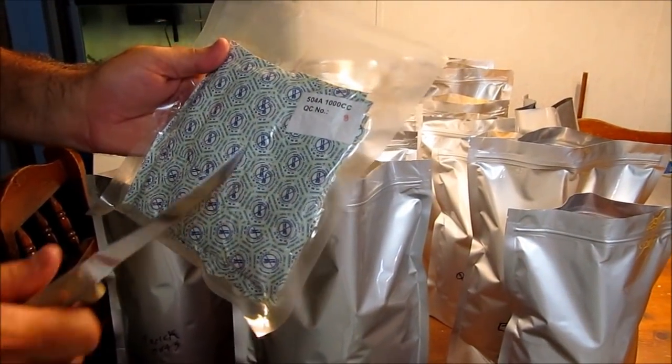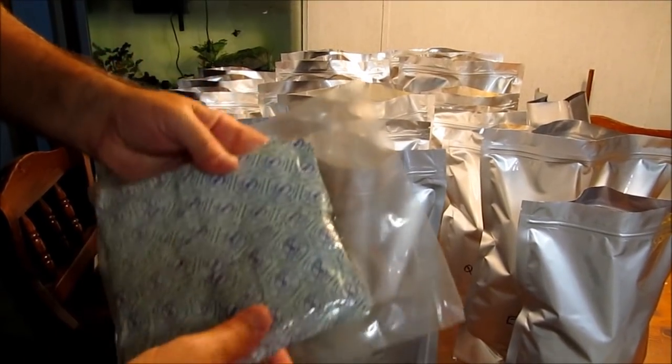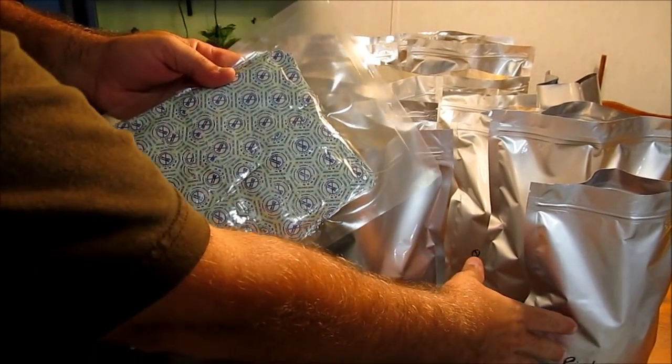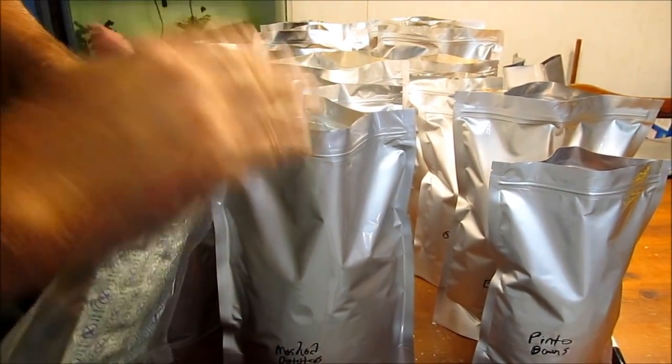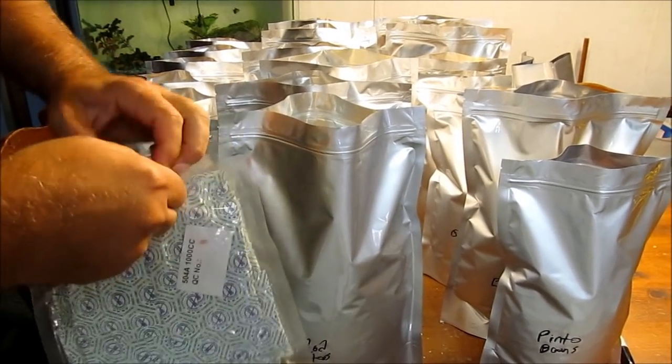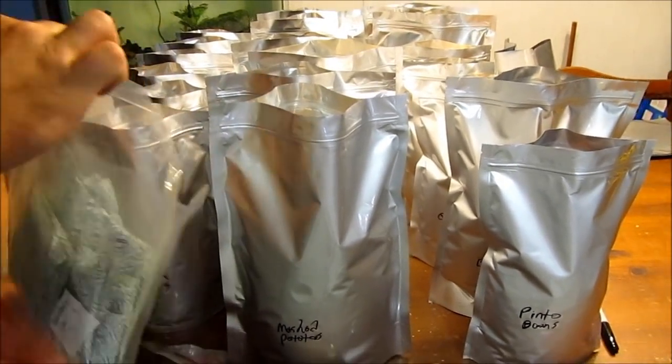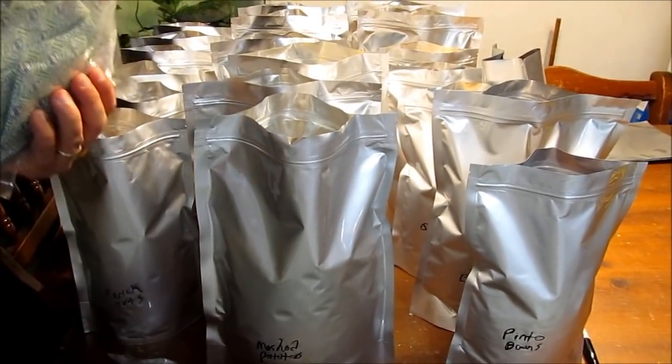These are 1000cc oxygen absorbers. They're a little big for what I need. Like I said, I didn't want to buy one size oxygen absorbers for the half gallon, then another size oxygen absorbers for the one gallon. I just bought a flat 1000cc oxygen absorber. It's supposed to be 20 of them in here. I'll set this up and just drop them down in there, kind of push them down into the mix.